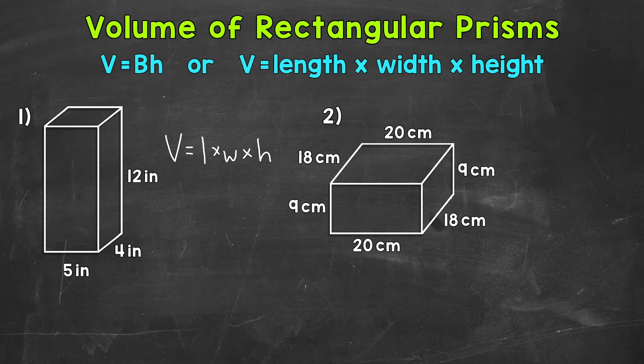Our next step, we need to plug in our length, width, and height. Now I never get too held up on which dimension is the length of our base and which is the width of our base. As long as we are using the 5 inches and the 4 inches, we're going to get the correct area of that base and therefore the correct volume of the rectangular prism.